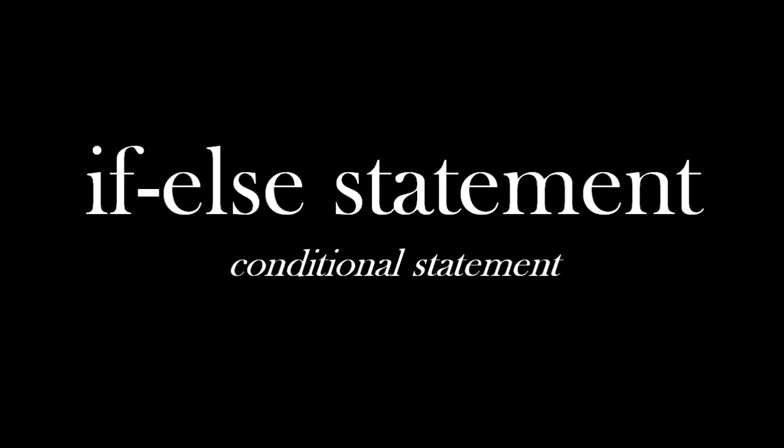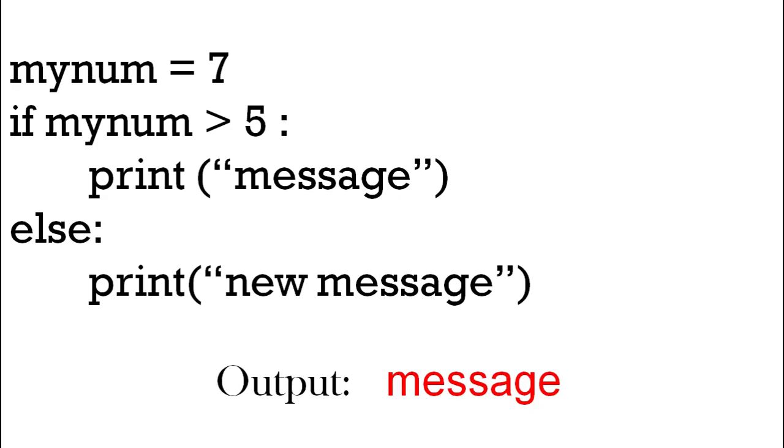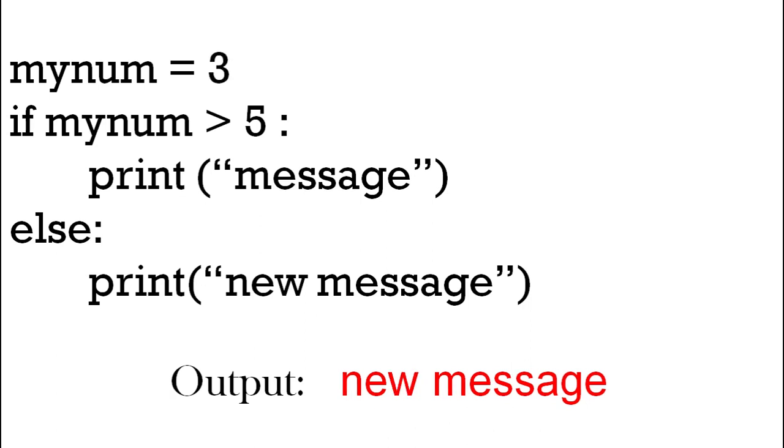If else statement, we've got the same except we've got the else part now. So we've got print message and print new message. If it's greater than five like seven, have the output message. If we change the number to three then it will print a new message.